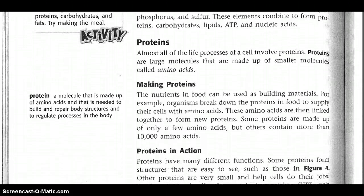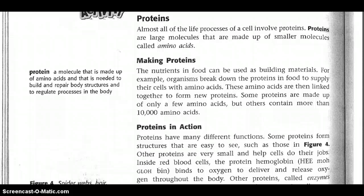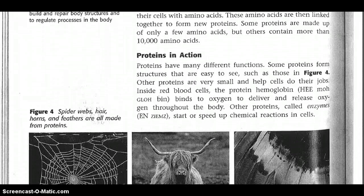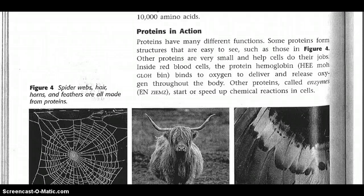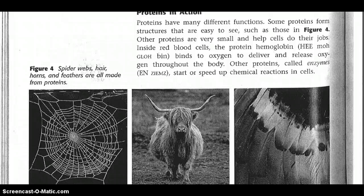Almost all of the life processes of a cell involve proteins. Proteins are large molecules that are made up of small molecules called amino acids. Organisms break down the protein in food to supply their cells with amino acids, which are then linked together to form new proteins. Some proteins are made up of only a few amino acids, but others contain more than 10,000 amino acids. Proteins have many different functions. Inside red blood cells, the protein hemoglobin binds to oxygen to deliver and release oxygen throughout the body. Other proteins called enzymes start and speed up chemical reactions in cells.